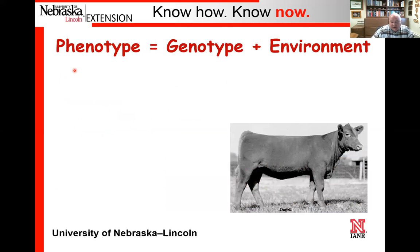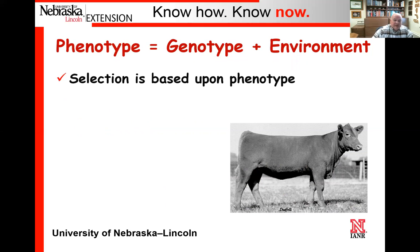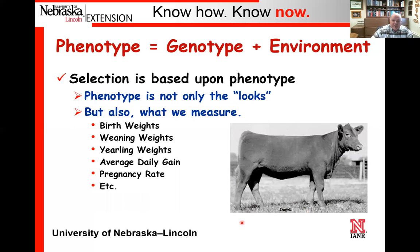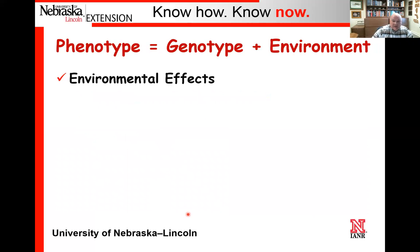Relative to phenotype, phenotype is basically genotype plus environment. All of our selections are based upon phenotype. It's not just how an animal looks—phenotype is everything that we see and measure. Birth weights, weaning weights, yearling weights, average daily gain, pregnancy rate—they're all phenotypes. We collect data and collect weights, but they're still dependent upon both genetics and environment. That brings us to the effects of environment: some effects are totally random, while others we know have an effect and can adjust for, hence developing adjusted performance records.